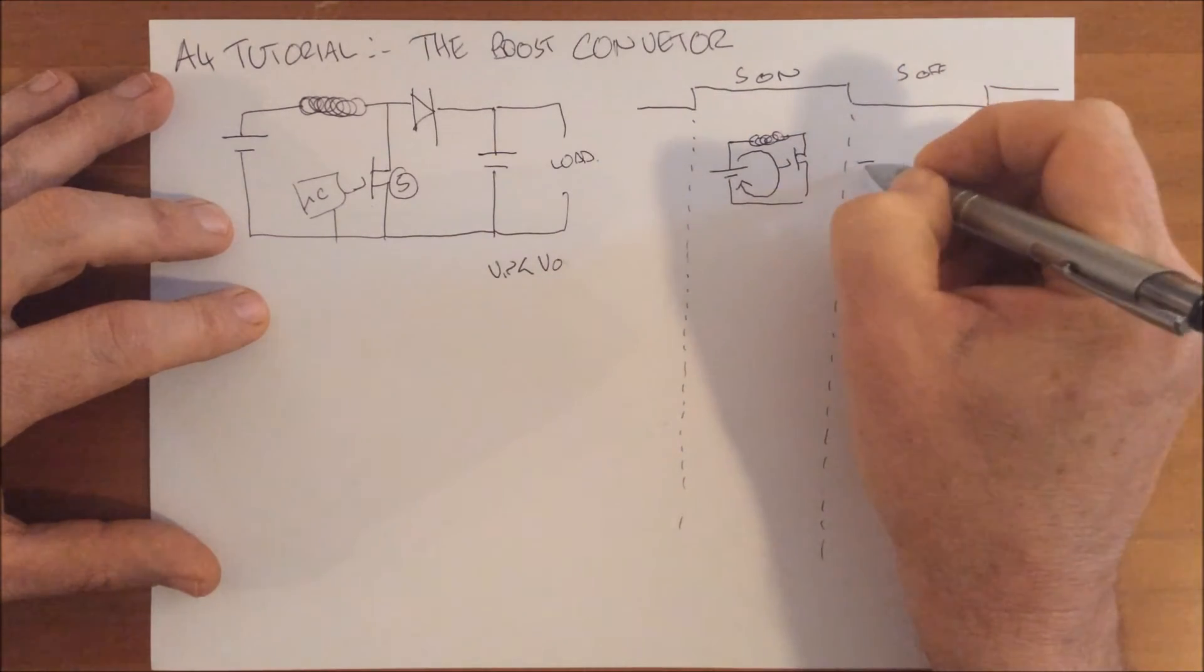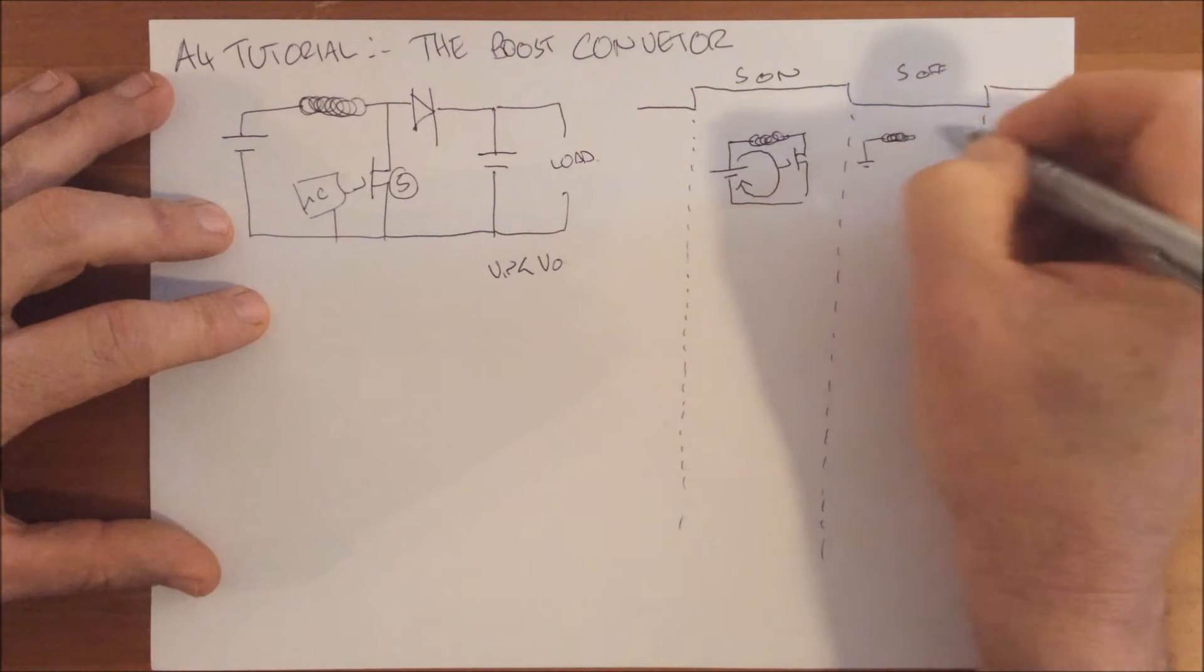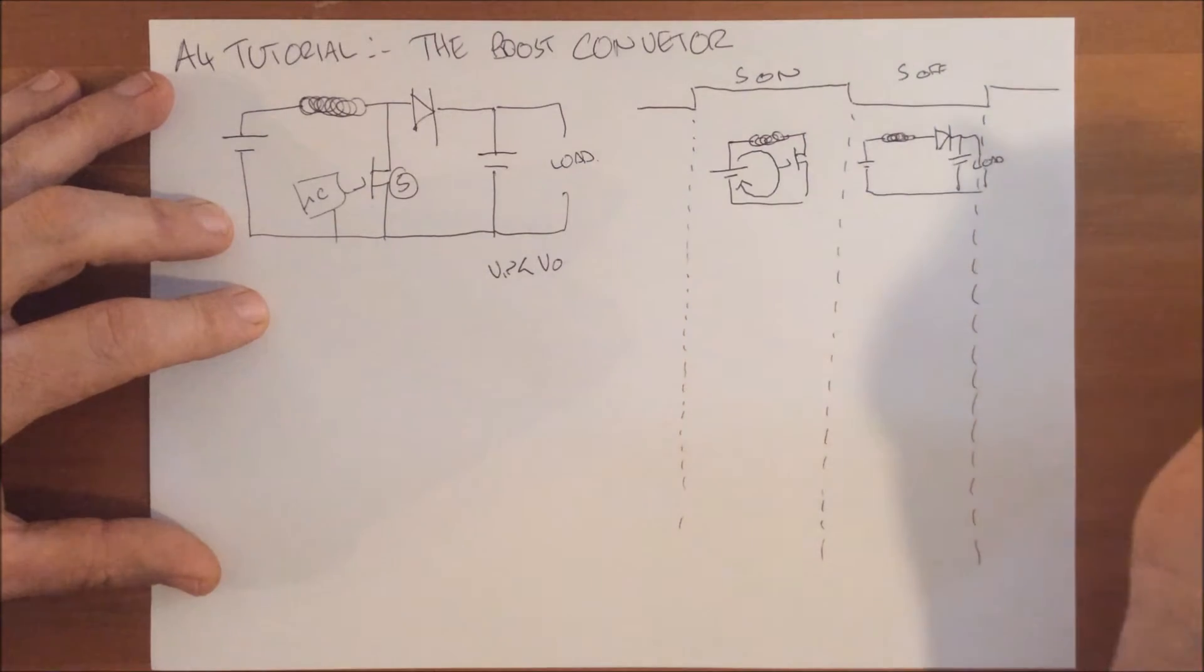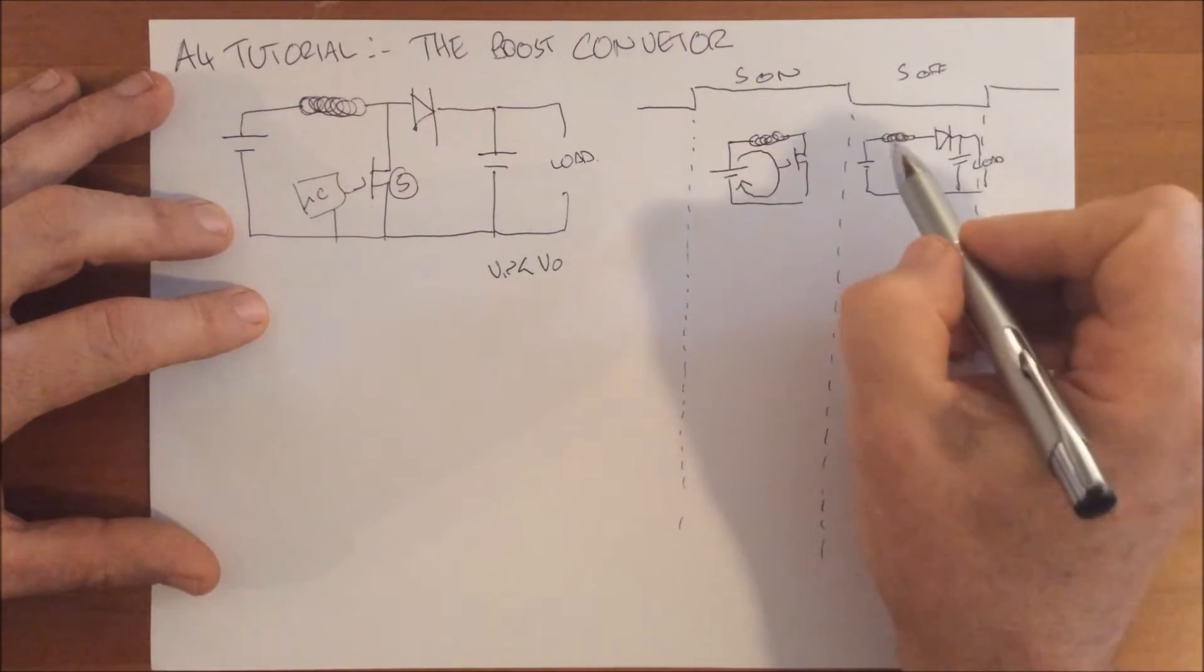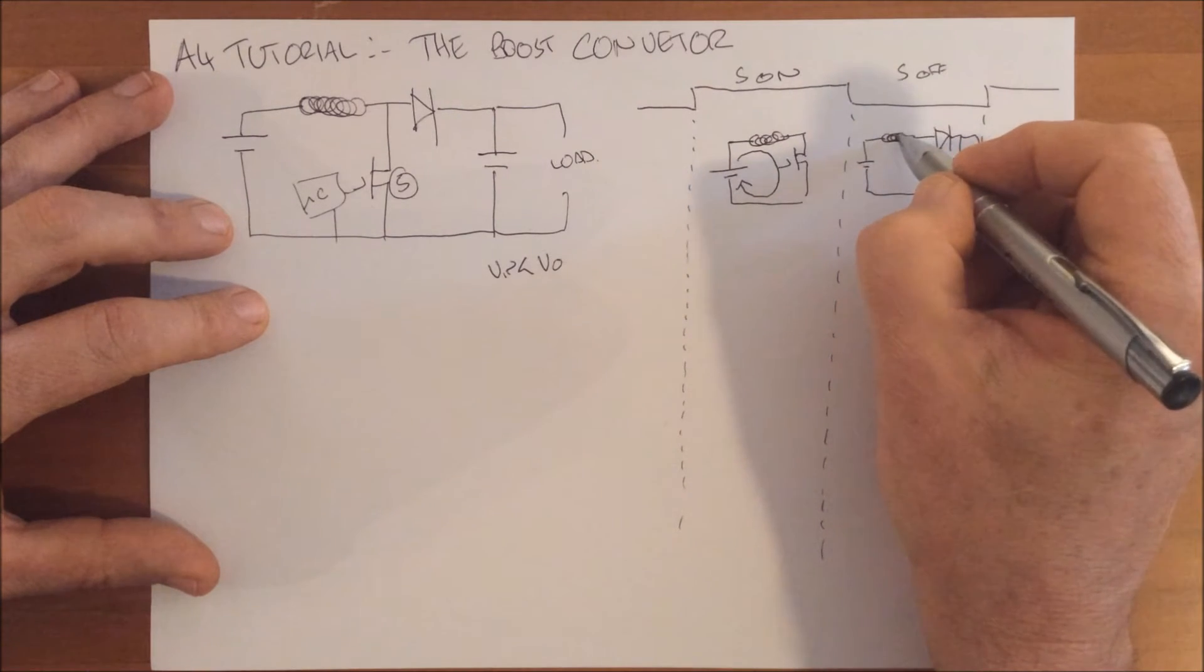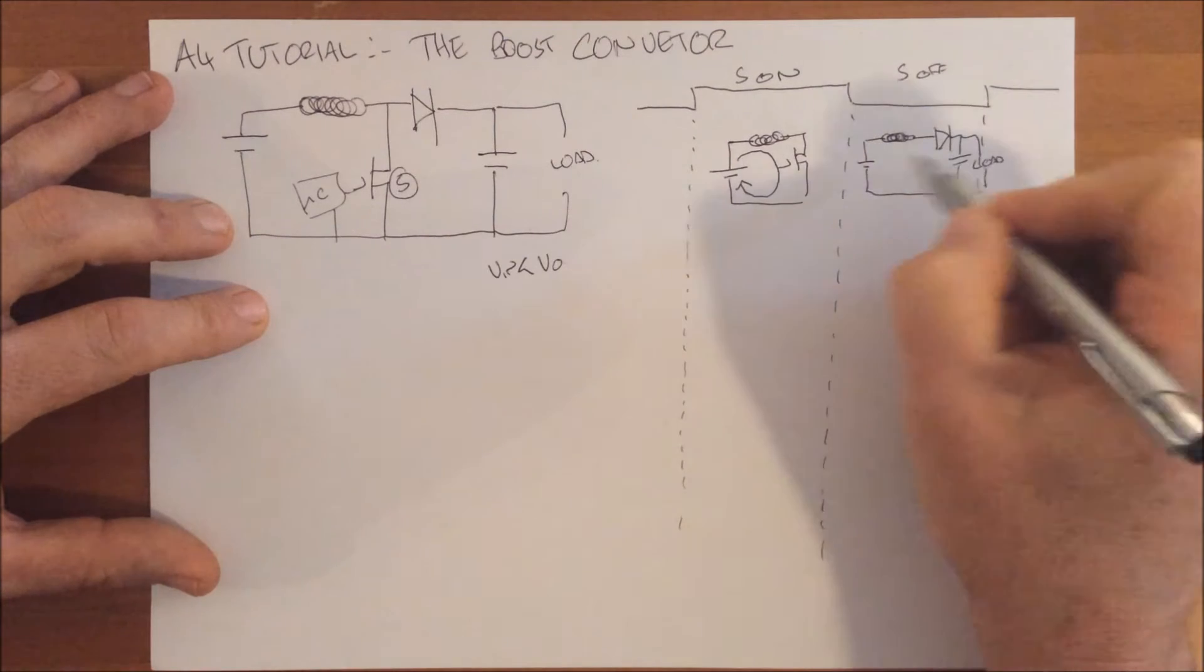When we turn the switch off, our circuit looks quite different. We still have our inductor which is now full of energy. We come down through a diode to our load, and that becomes our circuit. Essentially, we now have our input voltage and the energy of the inductor being dumped into the load. Our output is the sum of this and this.